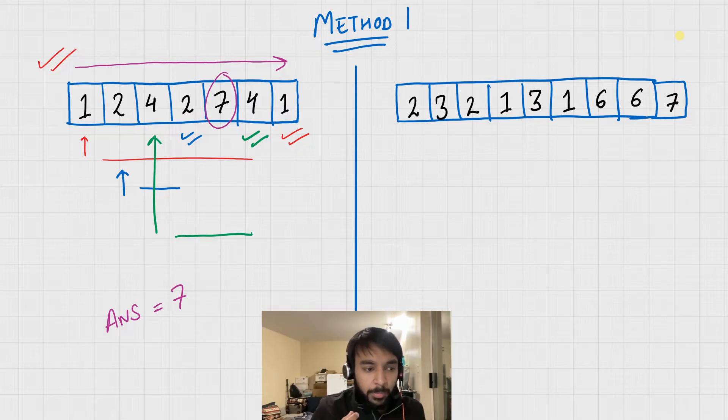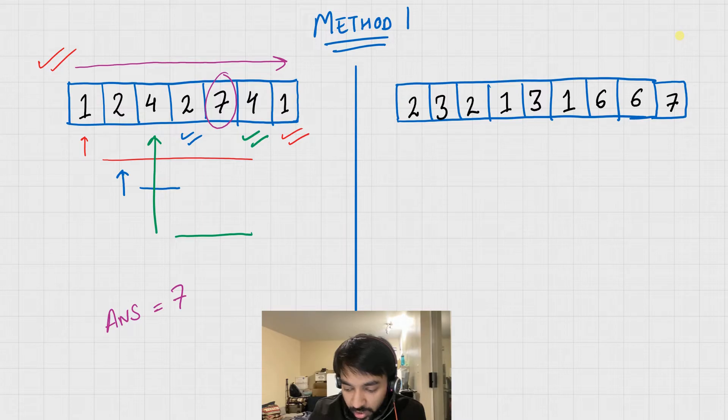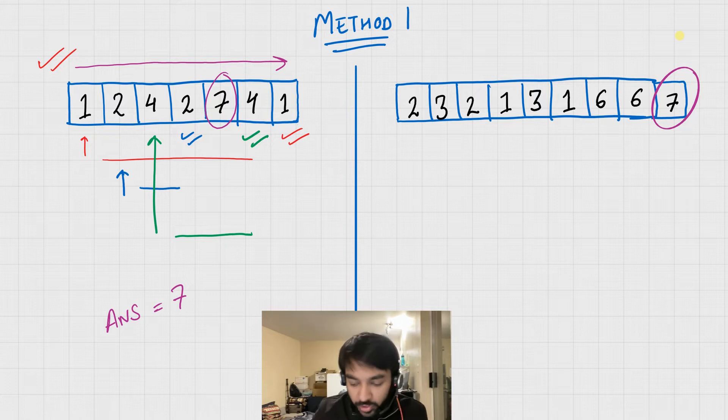But as you can see, this problem has a very weak point. If your number that exists only once is present on the very end, as you can see on the right, then you are wasting a lot of time while scanning through the entire process.